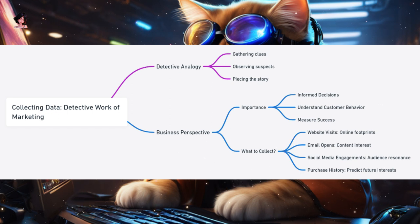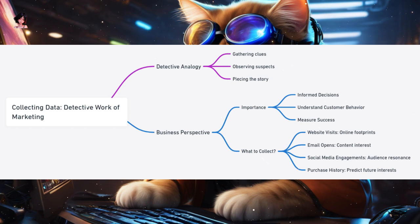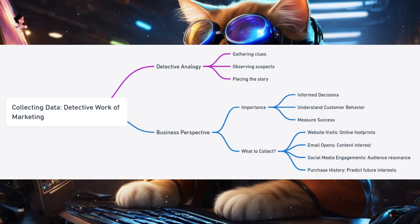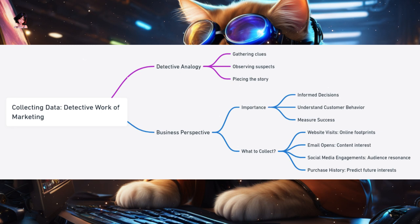Understanding customer behavior — by collecting data, you can understand how customers interact with your brand. It's like tracking the footprints of a suspect to see where they'd been. Measure success — data helps you measure the success of your campaigns. What kind of data to collect? Website visits tell you how many people are visiting your online store. Email opens — tracking who opens newsletters or promotional emails gives insights into what content interests your audience. Social media engagements — likes, shares, comments are all clues about what your audience appreciates. Purchase history — knowing what customers have bought in the past can help you predict what they might be interested in the future.